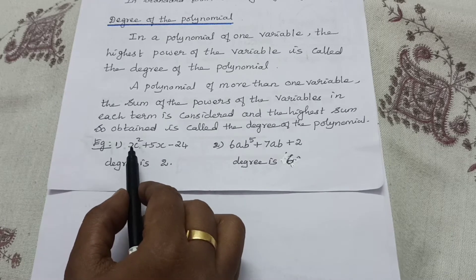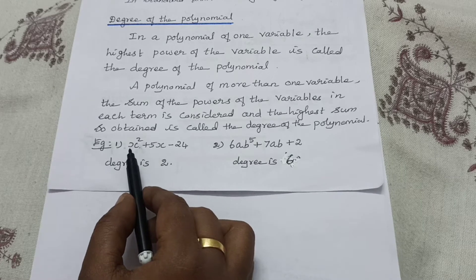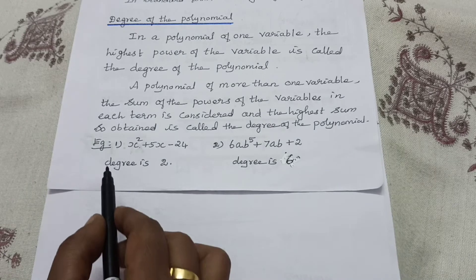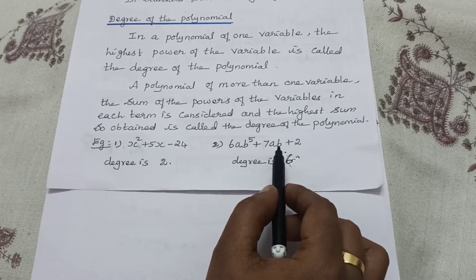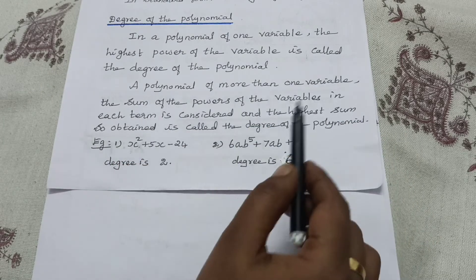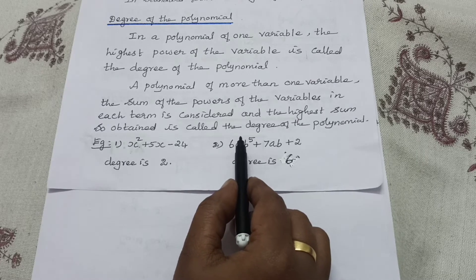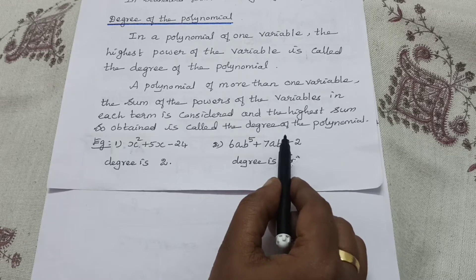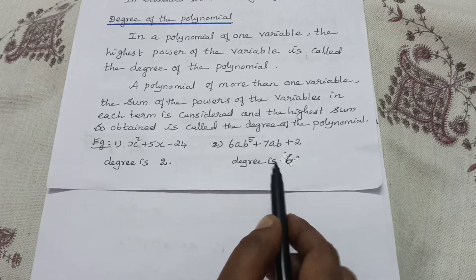For example, in a one-variable polynomial, X is the variable, and 2 is the highest power, so the degree is 2. In the second example, 6AB⁵ plus 7AB plus 2 — for more than one variable, we sum the powers. For the first term: A has power 1 and B has power 5, so 1 plus 5 equals 6. For the second term: A power 1 plus B power 1 equals 2. The highest sum is 6, so the degree is 6.